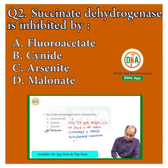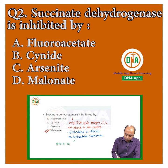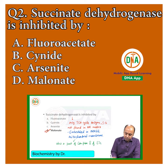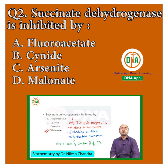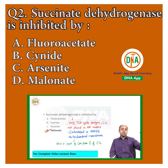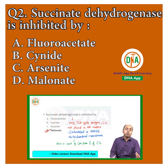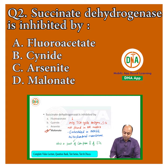This is because succinate dehydrogenase is also a part of Complex II of the electron transport chain (ETC). When you talk about the inhibitors of ETC, malonate is an inhibitor of Complex II of ETC, because it is inhibiting succinate dehydrogenase, which is a part of Complex II.